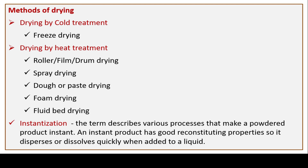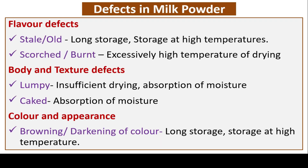Instantization describes various processes that make a powdered product instant — an instant product has good reconstituting properties, so it disperses or dissolves quickly when added to a liquid. Defects in milk powder: flavor defects include stale or odd flavors due to long storage or storage at high temperatures; scorched or burnt flavor due to excessively high drying temperature. Texture defects — lumpy texture due to insufficient drying or absorption of moisture. Browning or darkening is caused by long storage or storage at high temperature.